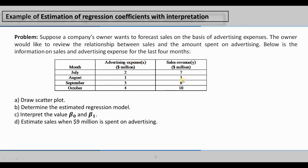We have four questions to answer: first, draw a scatter plot; second, determine the estimated regression model; third, find the regression parameters beta naught and beta 1, then interpret their values; and fourth, estimate sales when 9 million dollars is spent on advertising.